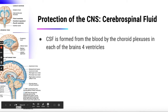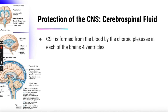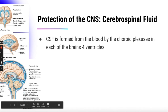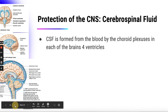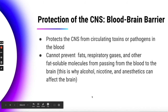Cerebrospinal fluid is formed from your blood by the choroid plexuses in each of the four ventricles of the brain. It surrounds the brain and spinal cord and is enclosed by the meninges. There's a space between the meninges and the brain and spinal cord that is filled with cerebrospinal fluid, which helps cushion the brain and spinal cord as another layer of protection.